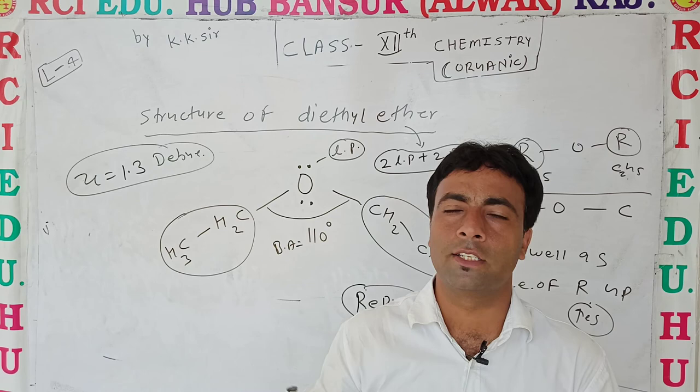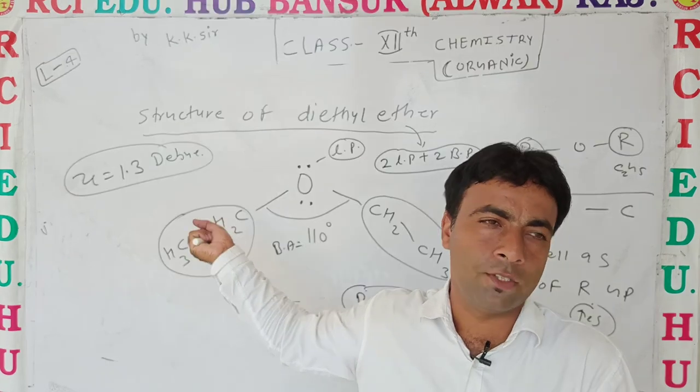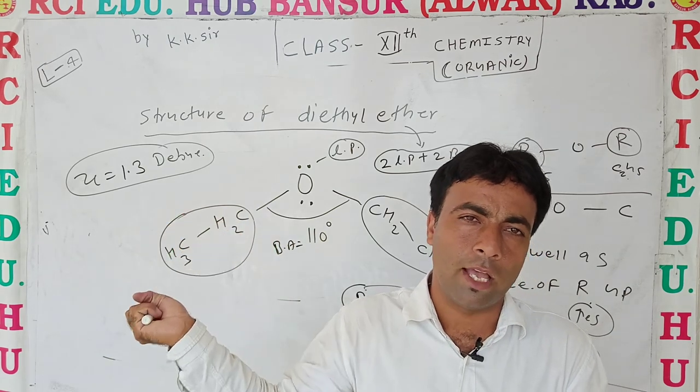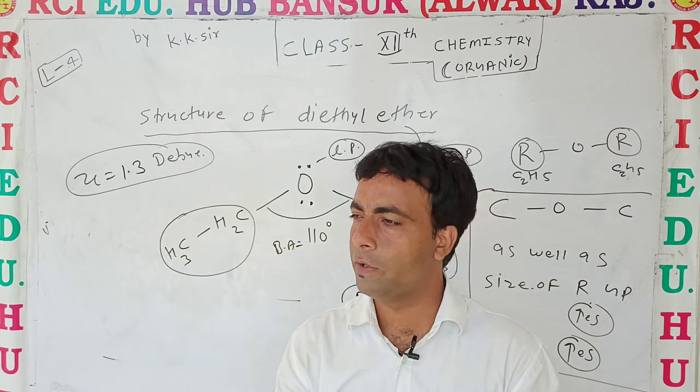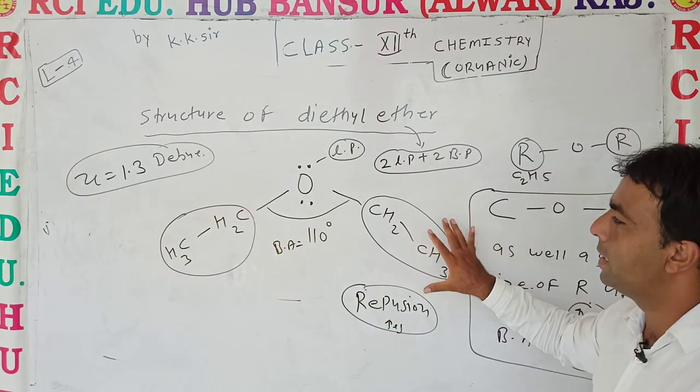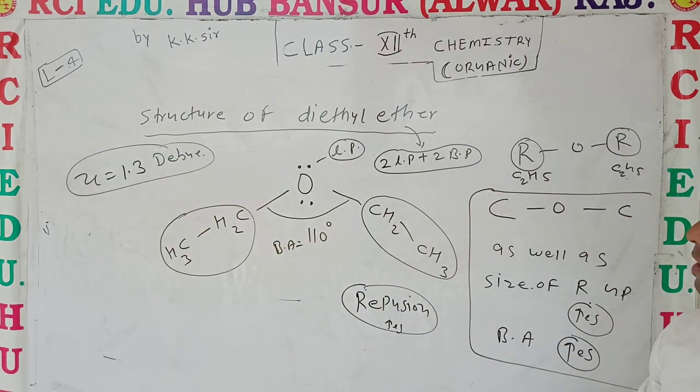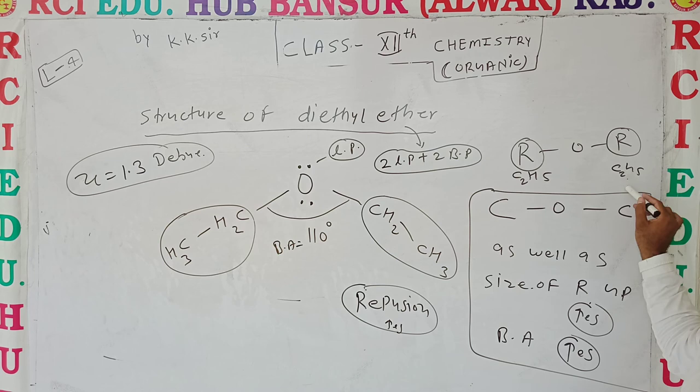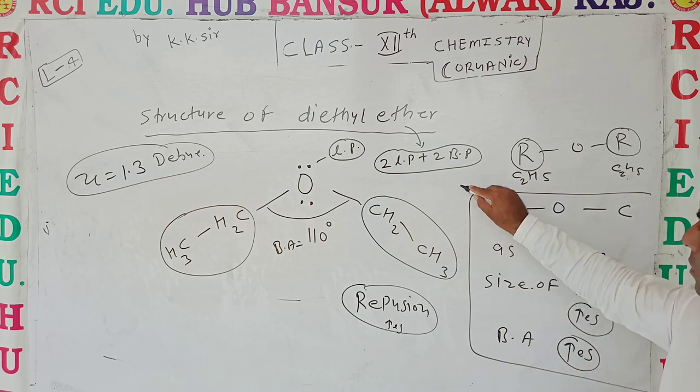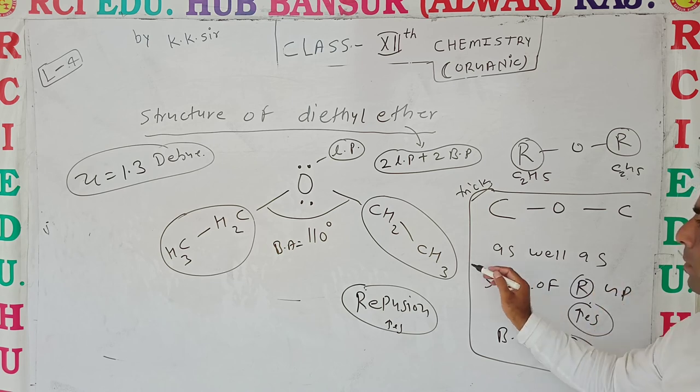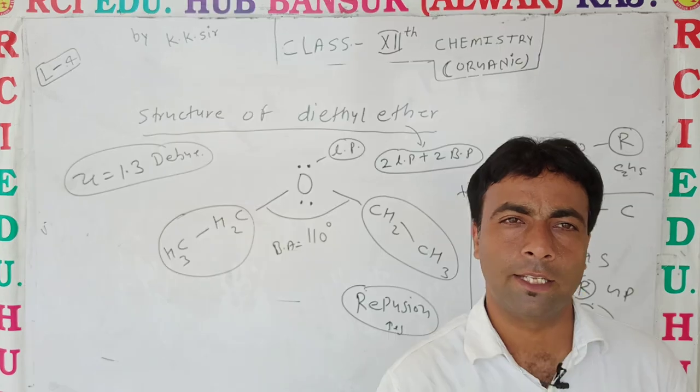Today we saw the structure of diethyl ether, which is also important. A question may be asked: what will be the effect if we increase the R groups? That is a trick for you. You can explain: as size of R group increases, there will be increase of bond angles due to repulsion. Thank you.